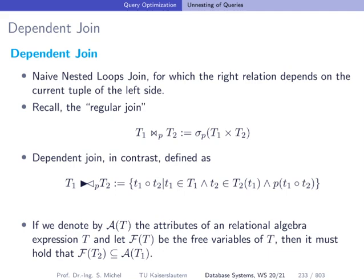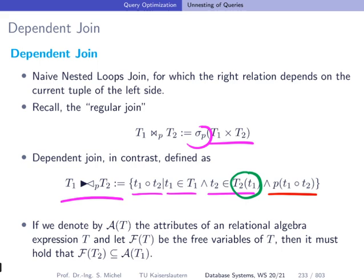More formally, a dependent join between T1 and T2 is defined as the concatenation of tuples from T1 and T2, where T2 is parameterized by a tuple from T1 — unlike a regular join which is simply the cross product with selection predicate P. The dependency means we don't use all of T2, but only certain tuples of T2 that depend on the current tuple T1 from T1.